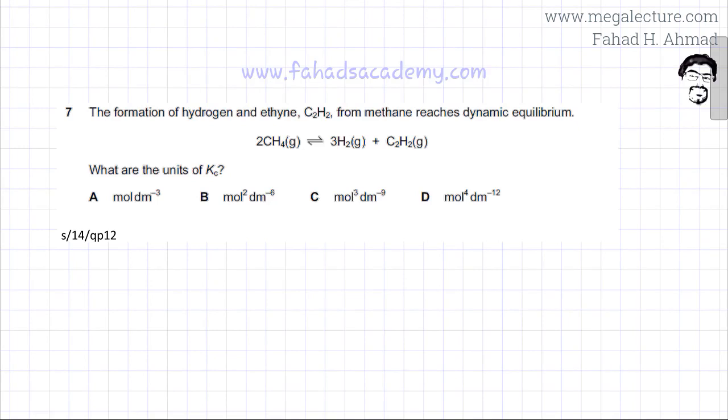The following question reads that the formation of hydrogen and ethane, C2H2, from methane reaches dynamic equilibrium. The reaction given is 2CH4(g) in equilibrium with 3H2(g) and C2H2(g), which is ethane. The question asks what are the units of Kc.